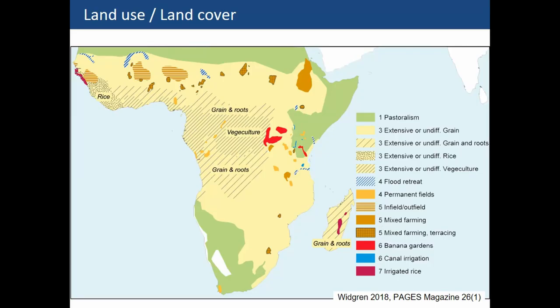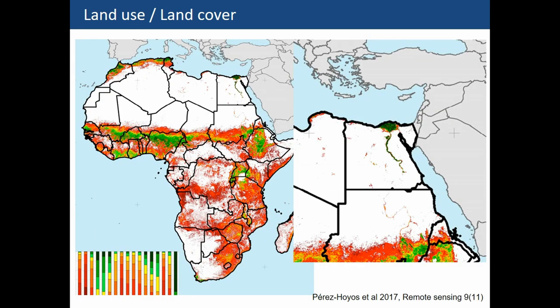This is a map that most of you will know from Wittgren, which is the reconstruction of land use in Africa around 1800 AD. I'm going to focus on basically central Sudan, which is here considered just pastoralism — obviously a very important land use strategy in this area, but not the only one. This is also a map showing spatial data agreement amongst nine different datasets on land cover related especially to crops, where red means no agreement, green means good agreement, and white means no crop at all.